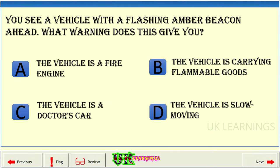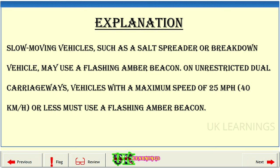You see a vehicle with a flashing amber beacon ahead. What warning does this give you? A: the vehicle is a fire engine. B: the vehicle is carrying flammable goods. C: the vehicle is a doctor's car. D: the vehicle is slow moving. The correct answer is D: the vehicle is slow moving.